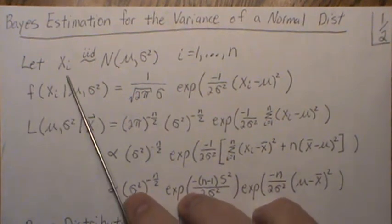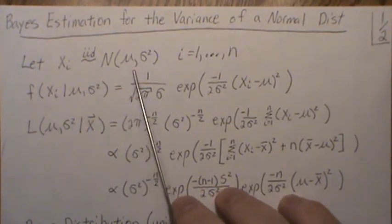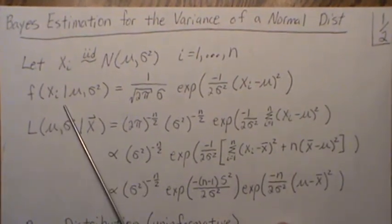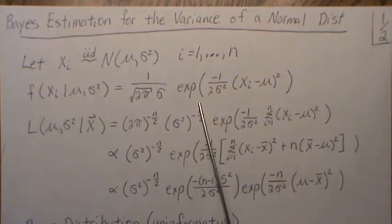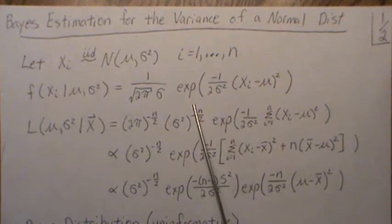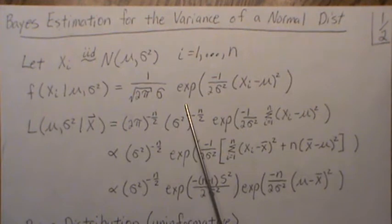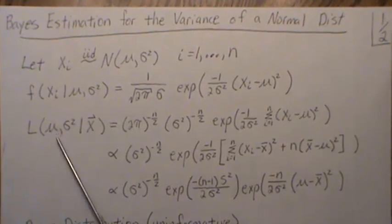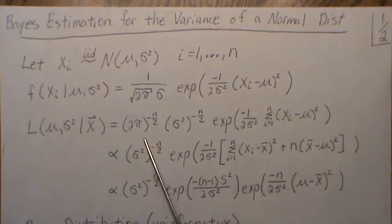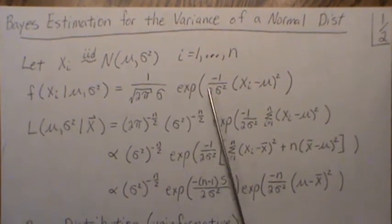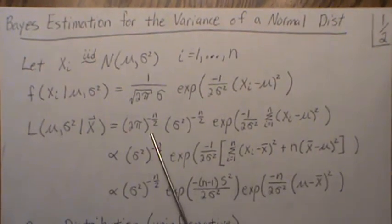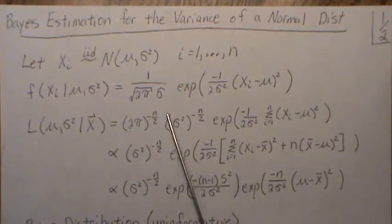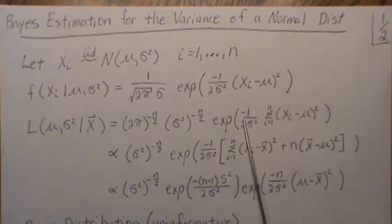We let our data X_i be IID normal with mean mu and variance sigma squared, with a sample size of n. The density for a normal distribution is as shown. We derive the joint PDF or likelihood function — the product of each marginal distribution taken n times — giving sigma squared to the nth power, and we sum the exponents to get the combined likelihood.